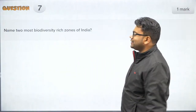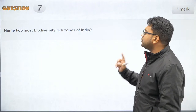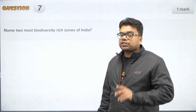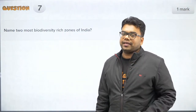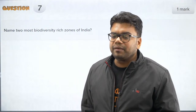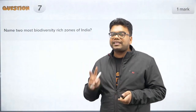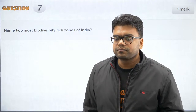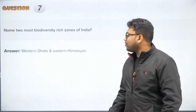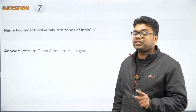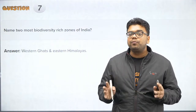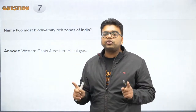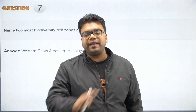Name the two most biodiversity-rich zones of India. In India there are a total of 10 bio-geographical regions. The right answer is Western Ghats and Eastern Himalaya. You need to remember this — it is a very important question for your boards. Western Ghats and Eastern Himalaya are the two most biodiversity-rich zones of India.